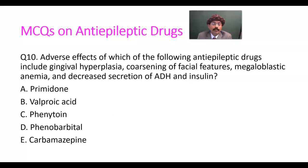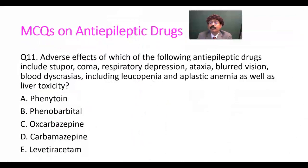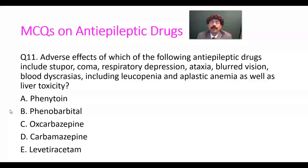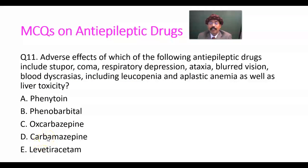Number eleven: adverse effects of which of the following anti-epileptic drugs include stupor, coma, respiratory depression due to chronic use, ataxia, blurred vision, blood dyscrasias including leukopenia and aplastic anemia, bone marrow suppression, and liver toxicity? The answer is carbamazepine — number eleven, carbamazepine causes all of these problems.